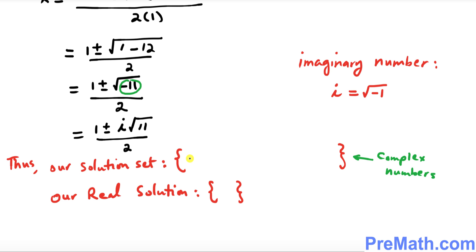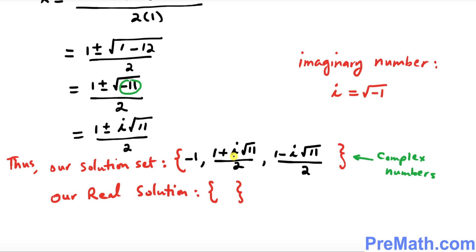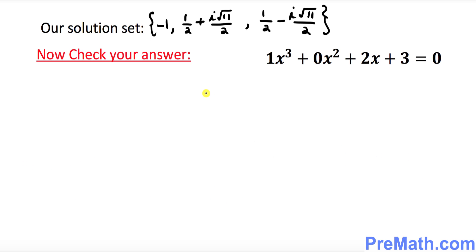So our two complex solutions are: x equals 1 plus i√11 divided by 2, and x equals 1 minus i√11 divided by 2. This gives us our full solution set in complex numbers. However, if we are looking for only a real solution, then x equals negative 1 is the only real solution.